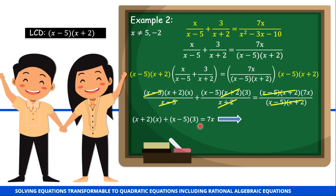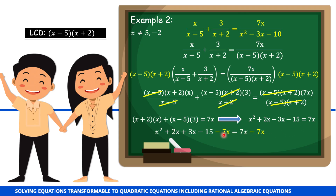Let's simplify this equation. Distributing x into x plus 2 gives x squared plus 2x. Distributing 3 into x minus 5 gives 3x minus 15. So we have x squared plus 2x plus 3x minus 15 equals 7x. Adding negative 7x to both sides to make the right side zero, and combining like terms on the left: 2x plus 3x minus 7x gives negative 2x. Our equation becomes x squared minus 2x minus 15 equals 0.